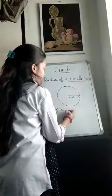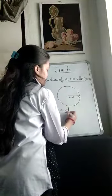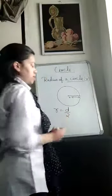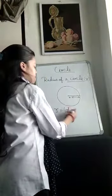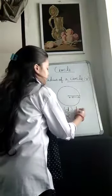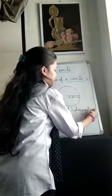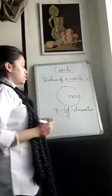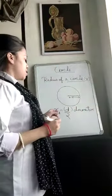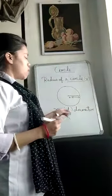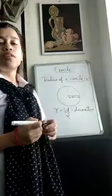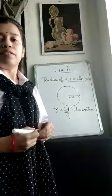Radius is also half of diameter. Here D represents diameter. Radius is half of diameter.